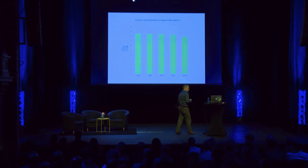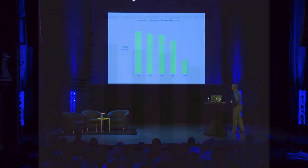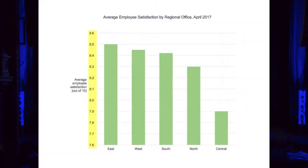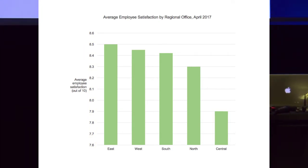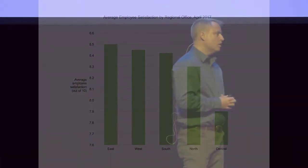You look at this and think, because everything falls roughly between about seven and a half and eight and a half, why not just show that part of the scale? Now it's kind of more exciting — bigger differences appear, and you can certainly see the differences between the various values more clearly. You're happy with this, so you send it to the management meeting.